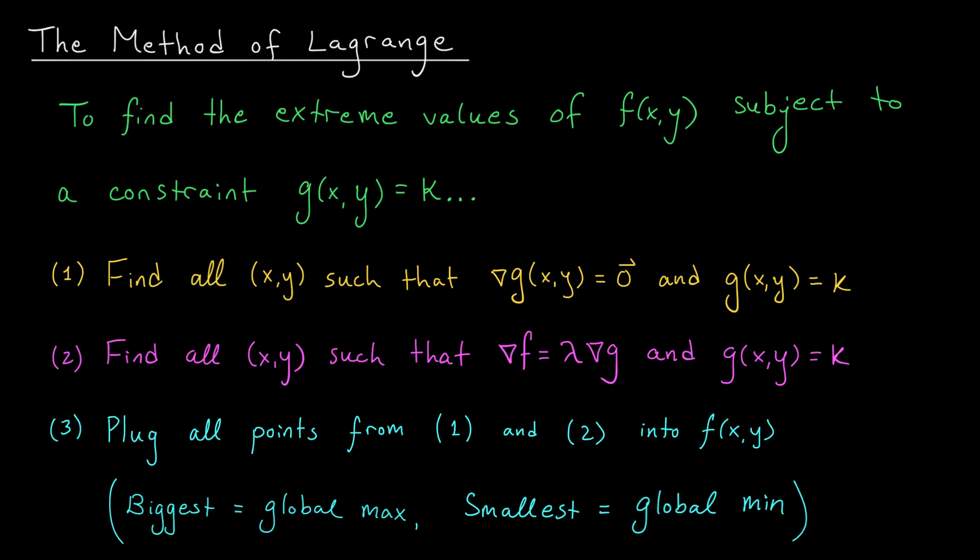Finally, once we've found all solutions from step one and step two, we're going to plug those points into the function f. The largest value we get out is going to be our global max, and the smallest value we get out will be our global min.